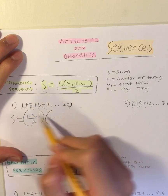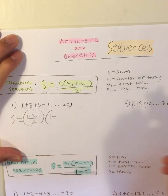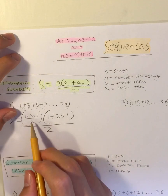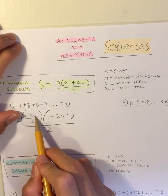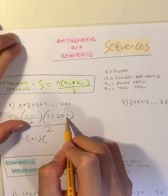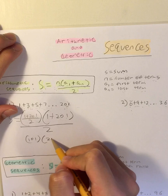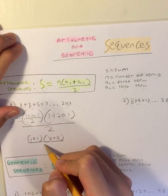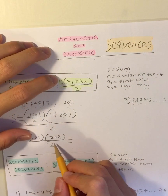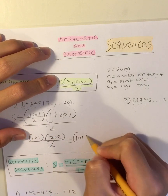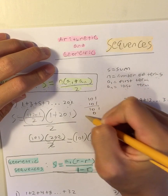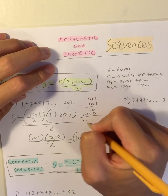Times A1, which is 1 because 1 is the first term, plus AN which is the last term, 201, and you put everything over 2. So let me simplify: 1 plus 201 divided by 2 is equal to 202 divided by 2, which is 101. Times what's 1 plus 201? That's equal to 202, divided by 2. And 202 divided by 2 is 101, so this is equal to 101 times 101. And what is 101 times 101? That's equal to 10,201.